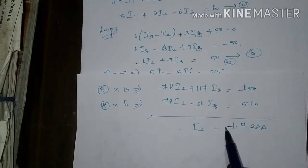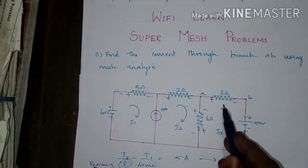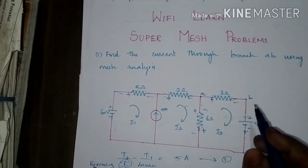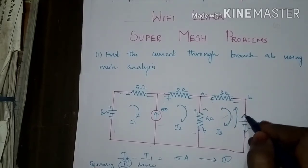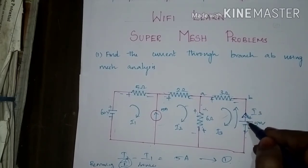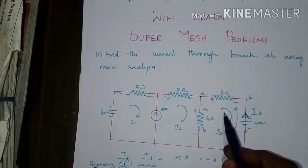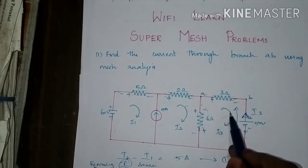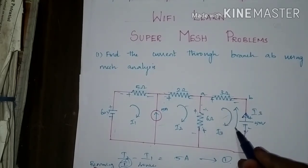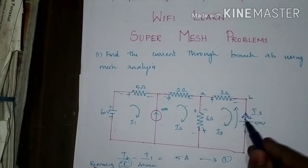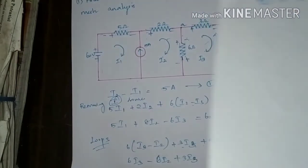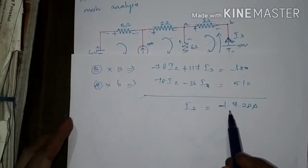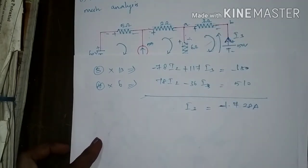The negative sign indicates the current direction assumed is wrong. The current is not flowing in the assumed direction. The voltage source is actually acting as a source — the current is flowing out of the battery, not into it. This negative sign means the current is leaving out of the voltage source.